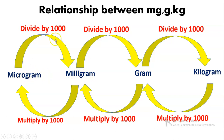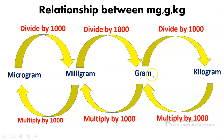If you need to convert microgram to milligram, you need to divide by 1000, because microgram is a smaller unit compared to milligram. If you need to convert milligram to gram, you divide milligram by 1000. And if you need to convert gram to kilogram, you divide gram by 1000.